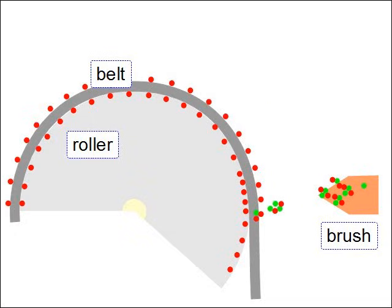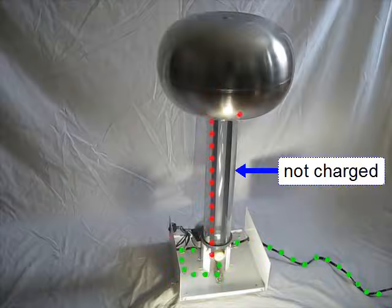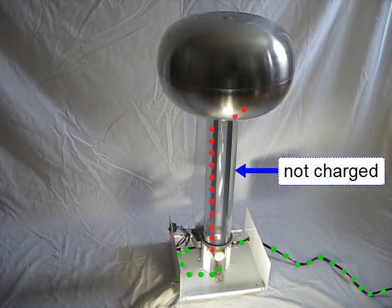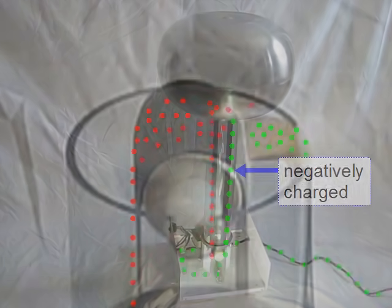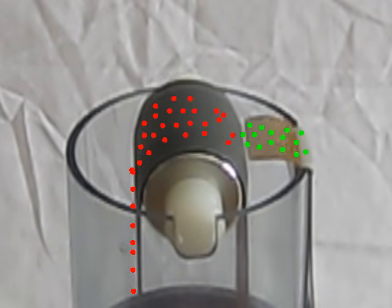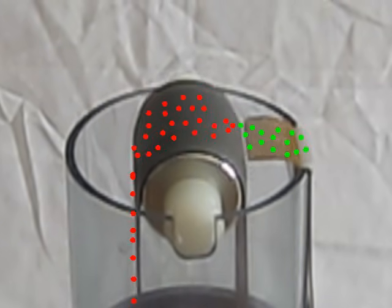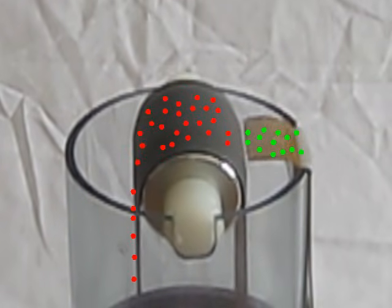Once the ions arrive at the positively charged belt, the belt takes the extra electrons from the ions. This causes the atoms on the outer surface of the belt either to be no longer charged, or to be negatively charged. And this means the half of the belt returning down to the bottom is either not charged or negatively charged. That's how charge — in this case in the form of electrons — is moved from the brush to the belt. But where do the extra electrons come from? We'll find out in our final step, step 5.